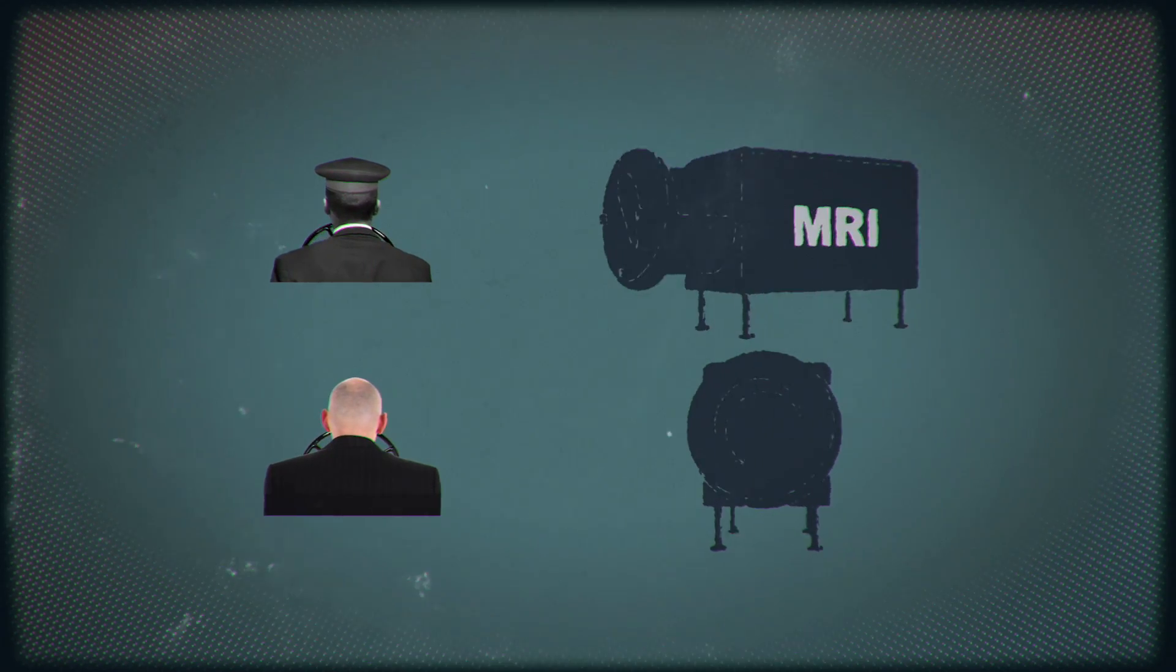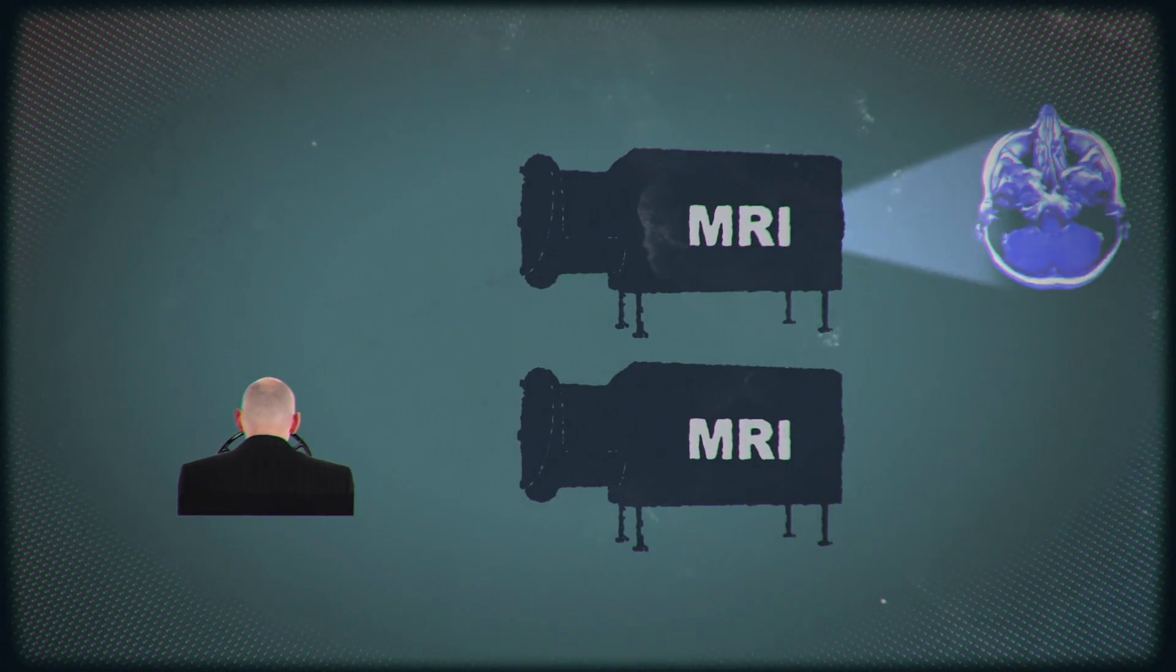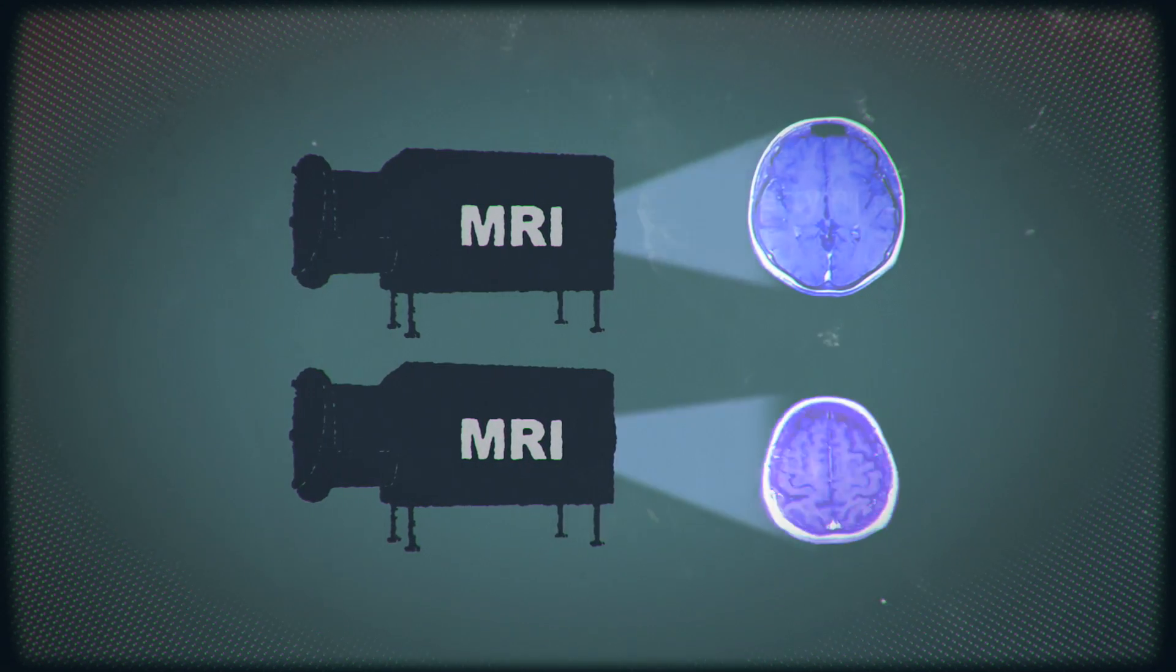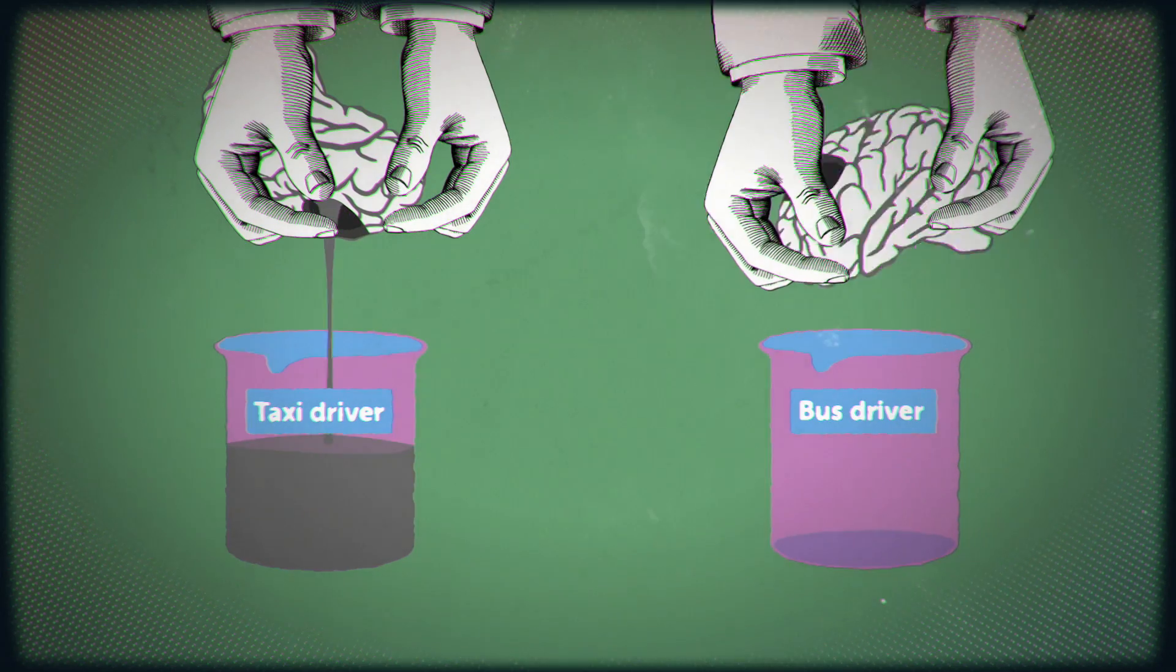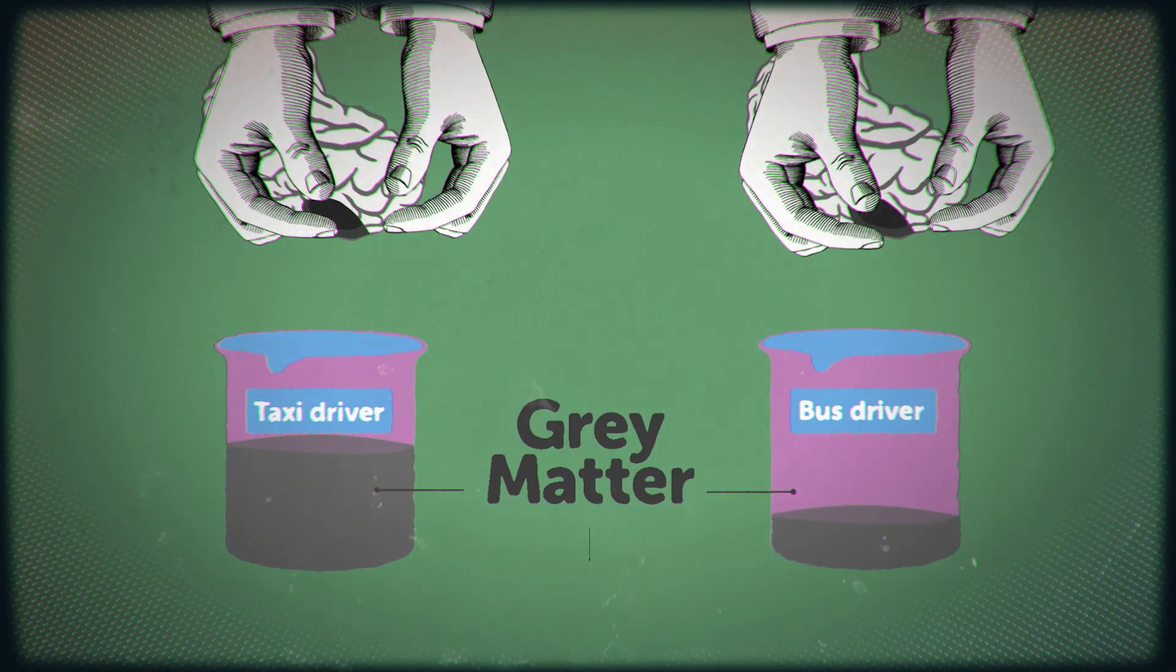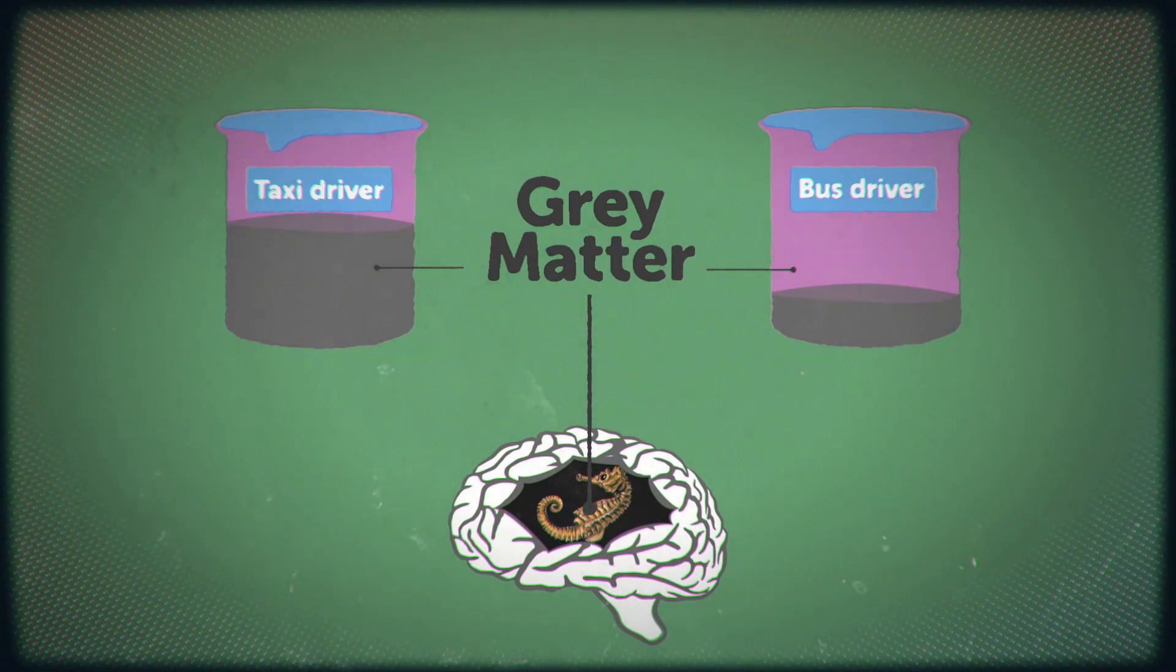The researchers took MRI scans of both bus and taxi drivers. But it was the cabbie's brain that showed something incredible. Their brains contained far more grey matter in the back part of the hippocampus than the bus drivers.